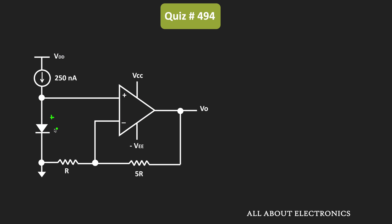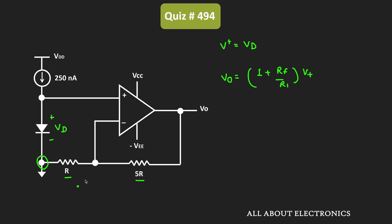So here, if Vd is the diode voltage, then the voltage at this non-inverting terminal is also equal to Vd, because this node is at the ground potential. That means V+ is equal to Vd. And we know that for the non-inverting configuration, the output voltage of the op-amp can be given as 1 plus Rf divided by R1, times V+. So here Rf is equal to 5R, while R1 is equal to R. So the output voltage of the op-amp is equal to 1 plus 5 divided by 1, times V+, which equals Vd. So Vout is equal to 6 times Vd.